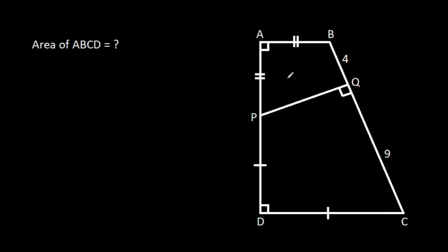In this video, we have been given that AB is equal to AP, CD is equal to DP, angle BAD is 90 degrees, angle ADC is 90 degrees, angle PQC is 90 degrees, BQ is 4, and CQ is 9. We have to find the area of ABCD.